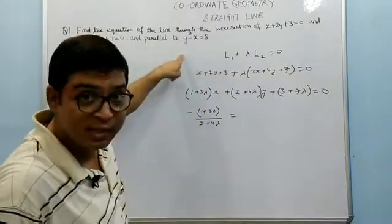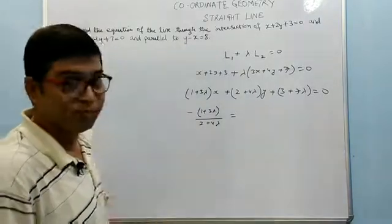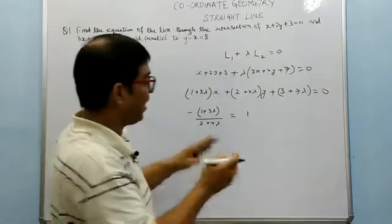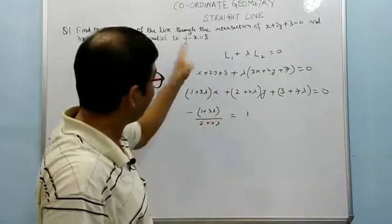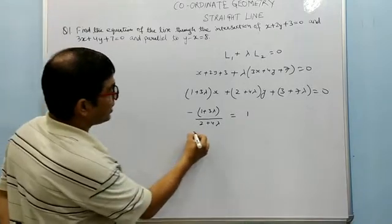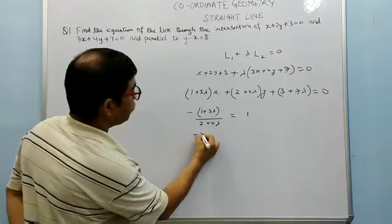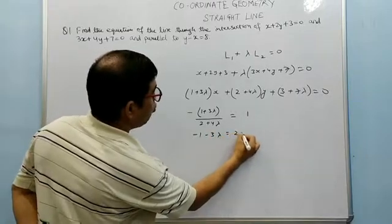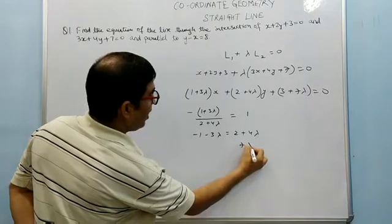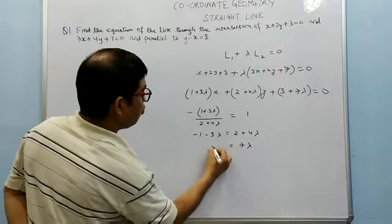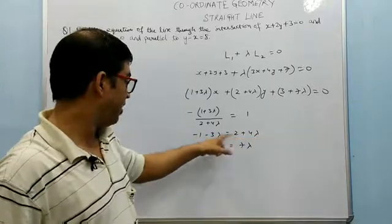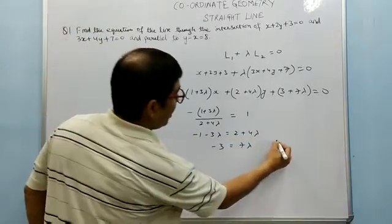This slope is equal to the slope of the given line because the lines are parallel. The slope of the given line comes out to be 1. So we get: minus (1 plus 3 lambda) divided by (2 plus 4 lambda) equals 1, which gives minus 1 minus 3 lambda equals 2 plus 4 lambda, so 7 lambda equals minus 3.